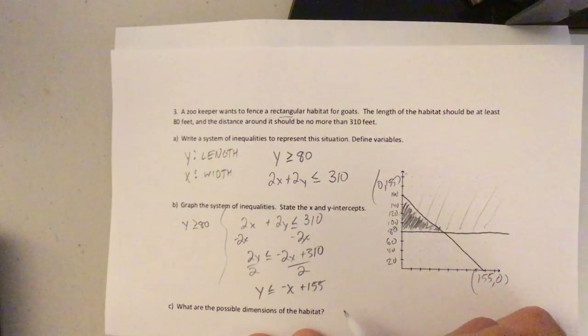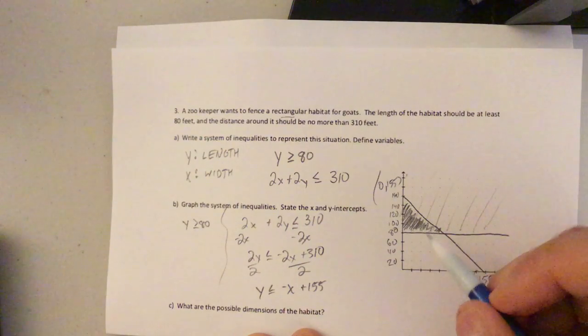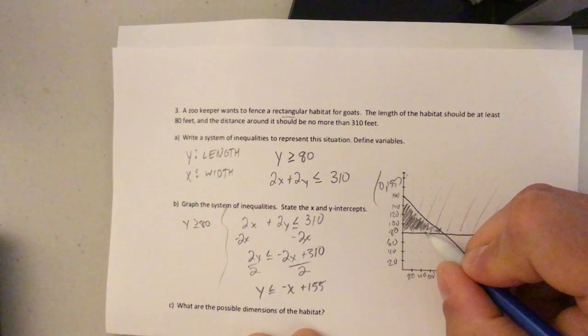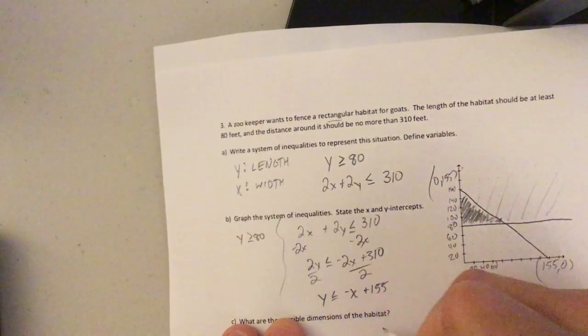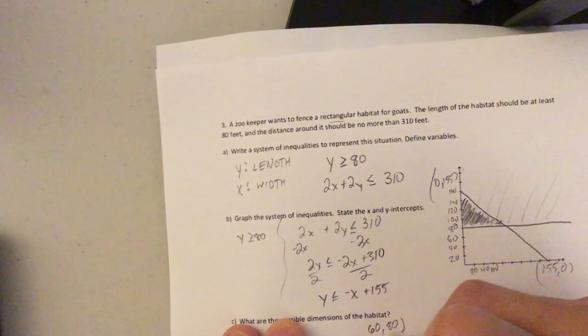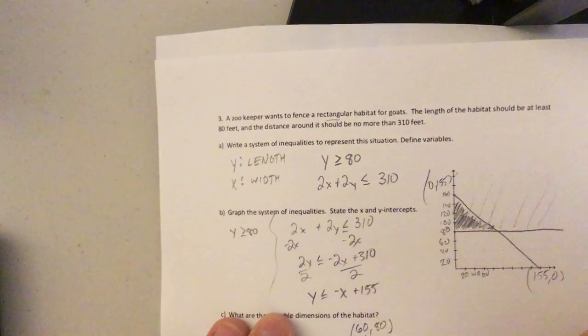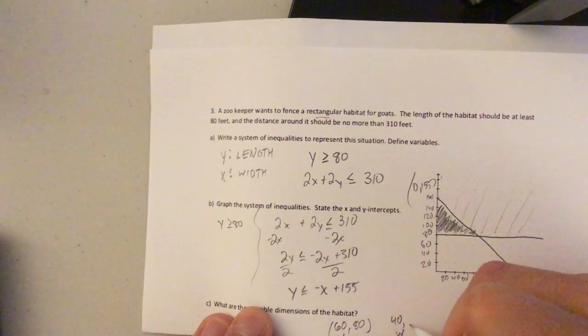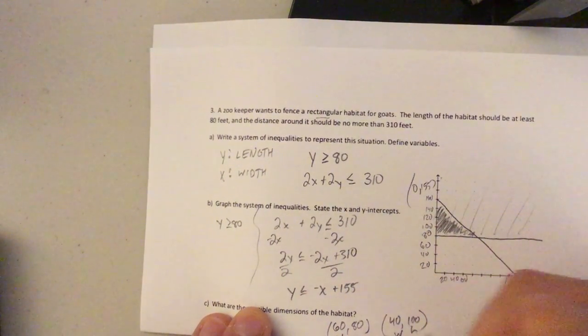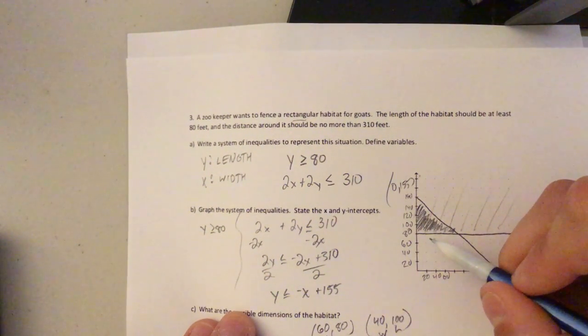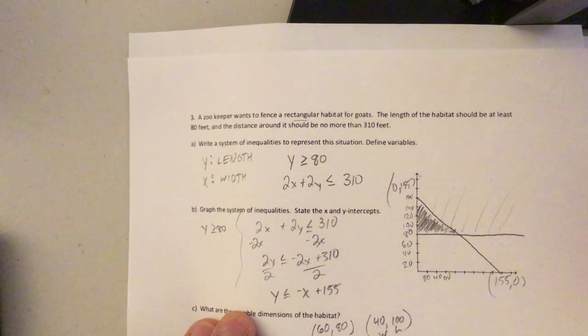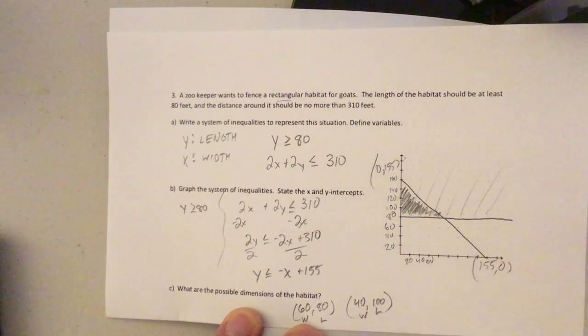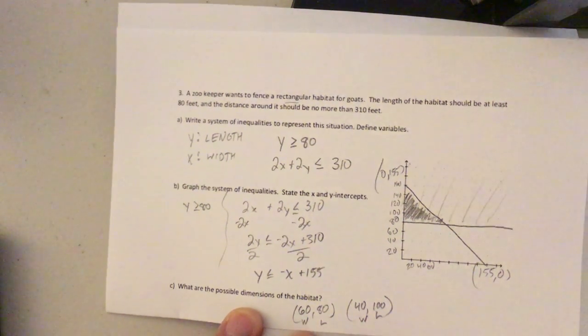So what are the possible dimensions of the habitat? Any point in here, you know, we could have, oh, and this goes up by 20s as well, kids. We could have 60 comma 80. That's right on the line, but it's in our, where 60 is our width and 80 is our length. That would work. We could have 40 comma 100, where 40 is our width and 100 is our length. That would work because that too is in this region. You might say, well, mister, what about 2, 120? That would work. You dig? All right. Sorry the video got a little long guys and gals, but I hope this makes sense. Once again, only two questions on your homework. Have a great day. Peace.